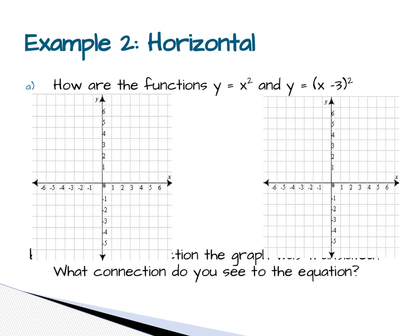Horizontal translations. That is when you add or subtract inside of parentheses. In this case, plus is actually going to mean left and minus is going to mean right.